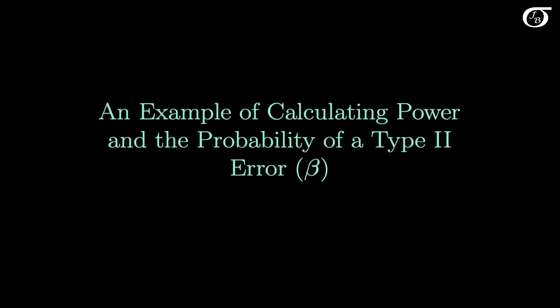Let's look at an example of calculating power and the probability of a type 2 error, which we often call beta. This example is done in the setting of a one-sample z-test on a mean, but similar logic holds for other types of tests.